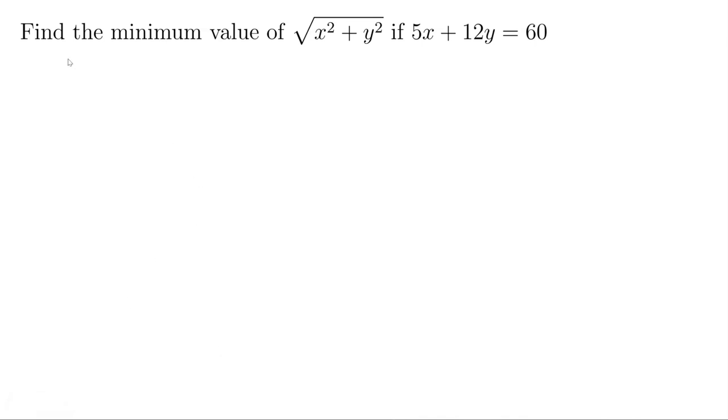So let's look at the problem. We want to find the minimum value of square root of x² plus y² if 5x plus 12y equals to 60. So first x and y satisfy a certain linear relationship, and then we want to evaluate x² plus y² or square root of it, basically the same.